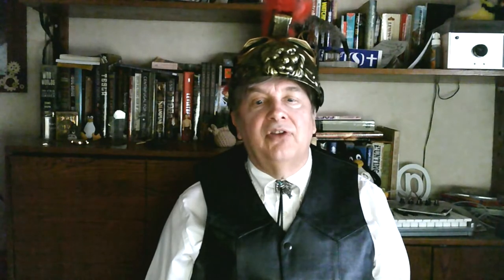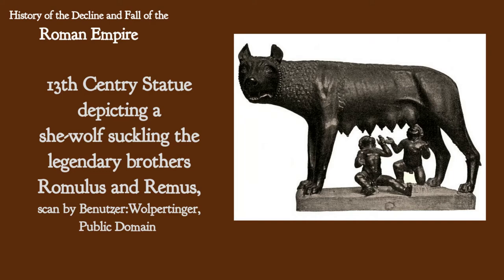Rome began as a village around 750 BC on the banks of the Tiber River in what we now call Italy. It was founded by the legendary brothers Romulus and Remus — Rome takes its name from Romulus. It started as a small kingdom, became a republic in the tradition of the ancient Greeks, then turned into an empire spanning most of the known world. At its peak, eight centuries later, Rome ruled all of Europe west of the Rhine and south of the Danube, most of Britain, all of Africa north of the Sahara, and all of the Middle East excluding the desert wastes of Arabia.